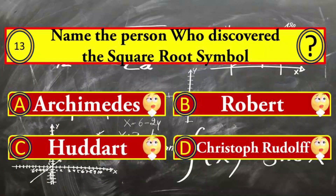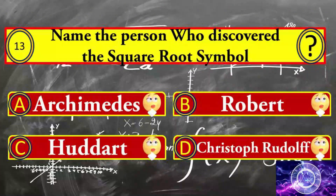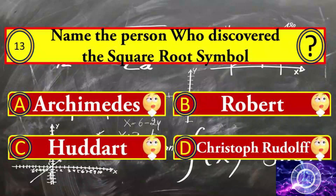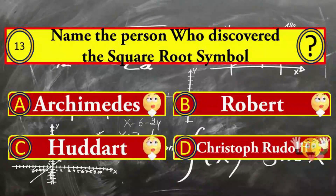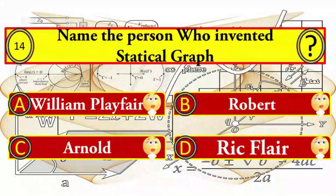Question number thirteen: name the person who discovered the square root symbol. Your options: A) Okamadis, B) Robert, C) Heard it, and D) Christopher Rudolph. Christopher Rudolph is the right answer.